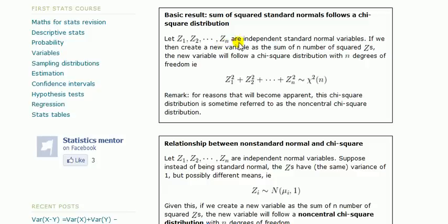Say that we have Z₁, Z₂ to Zₙ where each of them are independent standard normal variables, i.e. they're normally distributed with mean of 0 and variance of 1. Then if we square each term and add them up, then that creates a new variable which follows a chi-square distribution with n degrees of freedom.